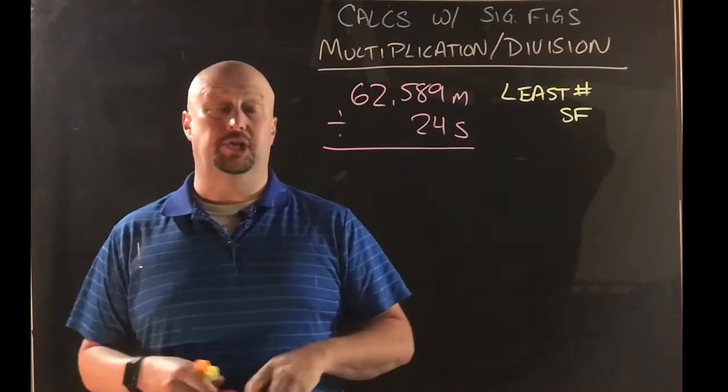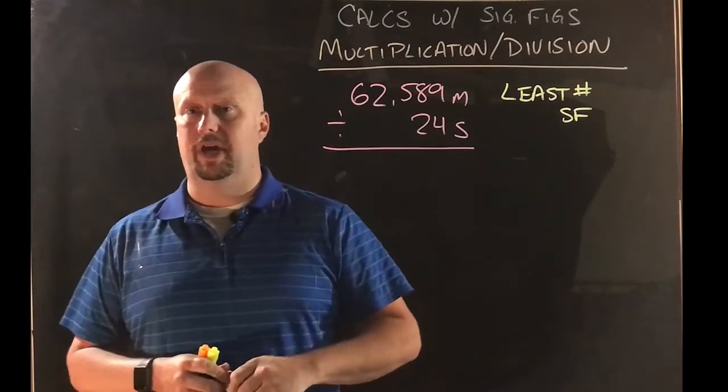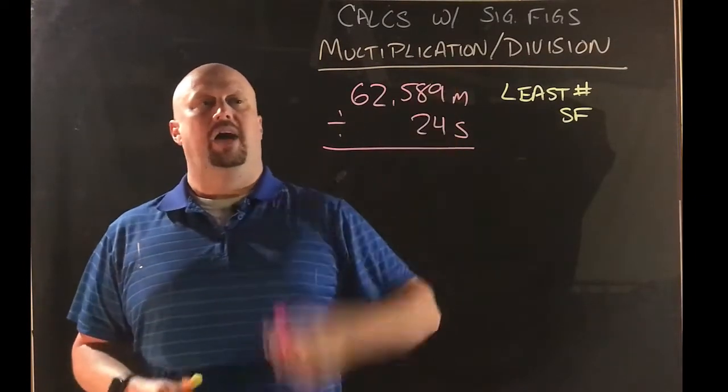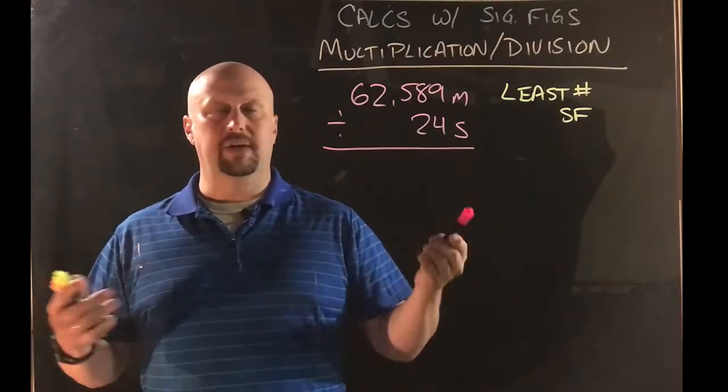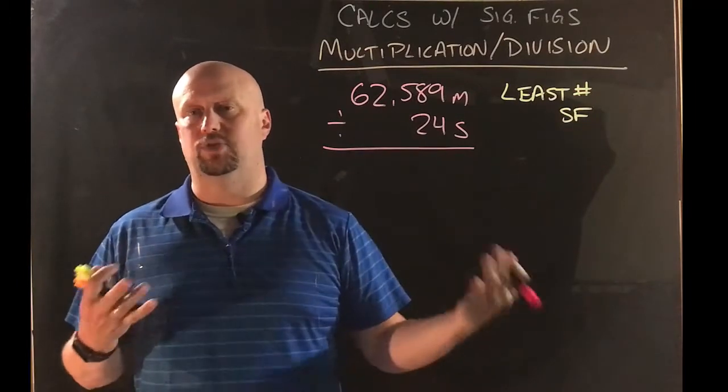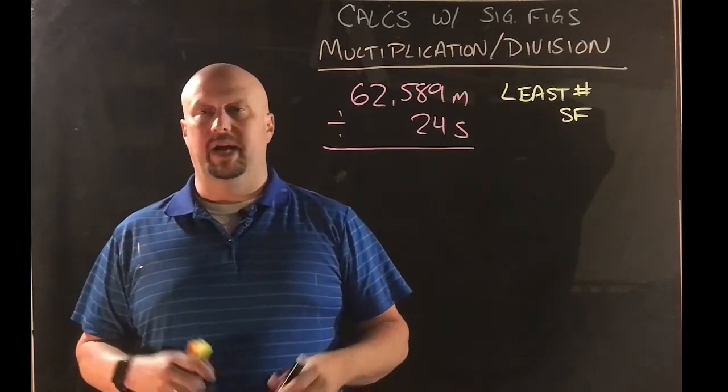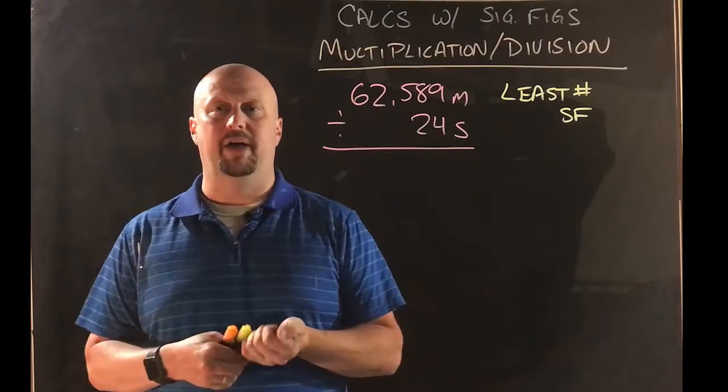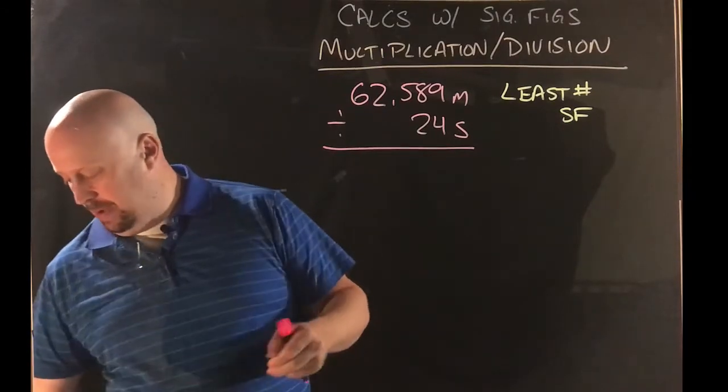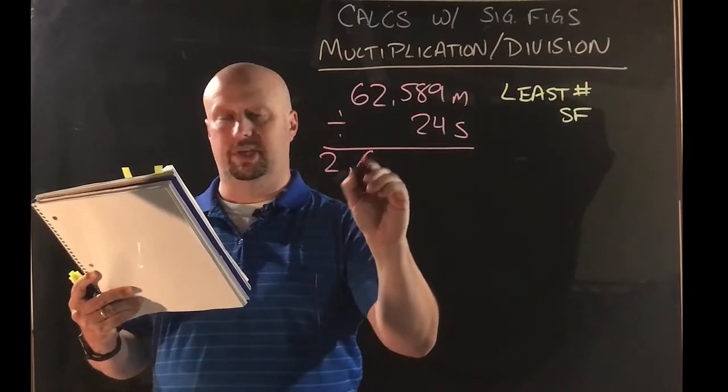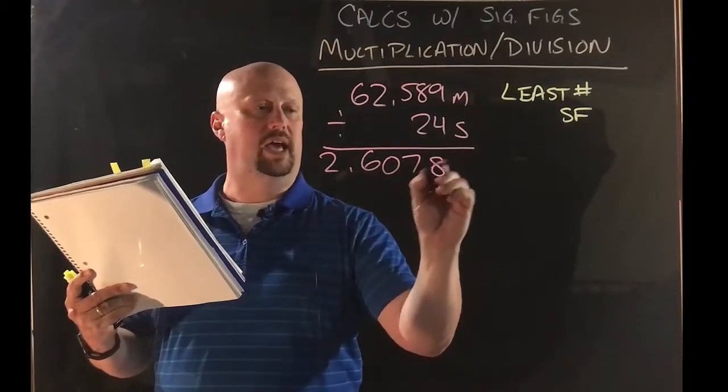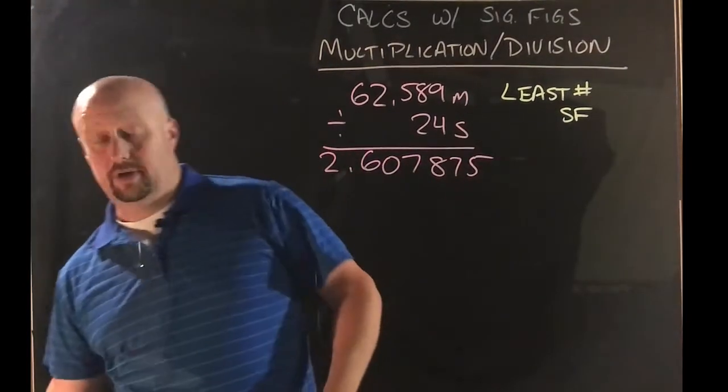All right. So division, velocity calculation. Distance over time. I've got 62.589 meters divided by 24 seconds. Same thing applies. Least number of significant figures is what really matters here. So we got to punch this in. We're going to do the math. So let me grab my paper here real quick. So the answer to this one is 2.607875.